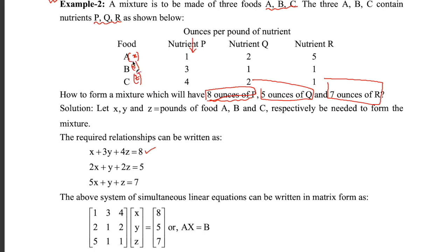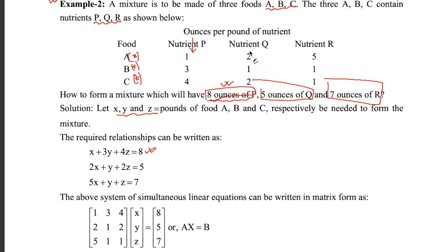Let's say we need x pounds of food A, y pounds of food B, and z pounds of food C. Therefore, according to the question we can create three equations. x plus 3y plus 4z equals 8, since we want eight ounces of P nutrients. Using this column we can create the second equation.